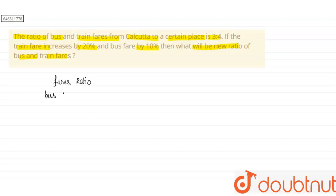The ratio of bus to train is given as 3 is to 4. So from here, let us consider the bus fare is 3x and train fare is 4x. Alright.